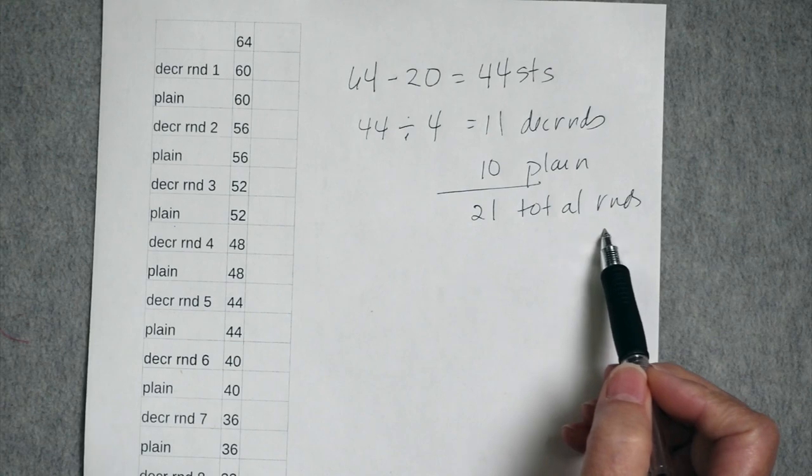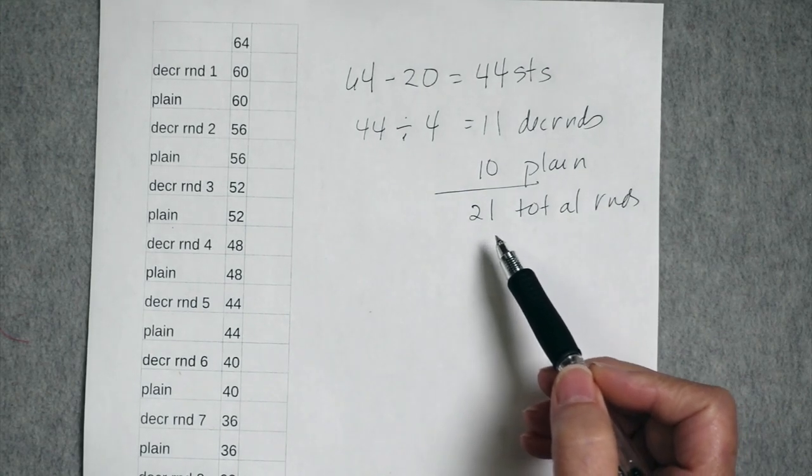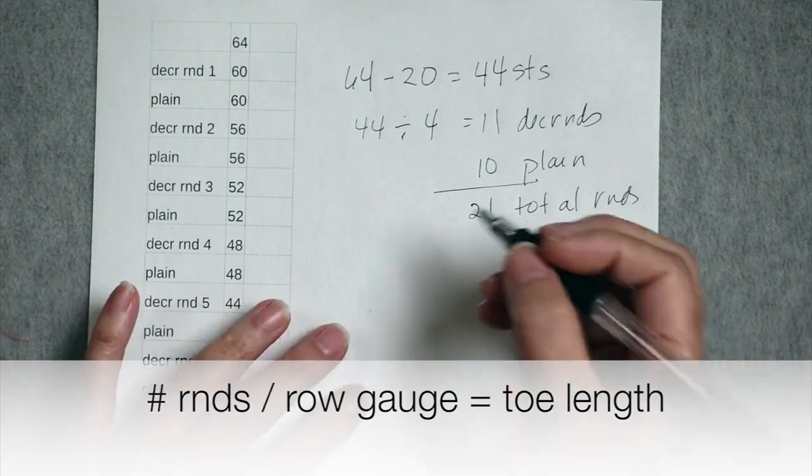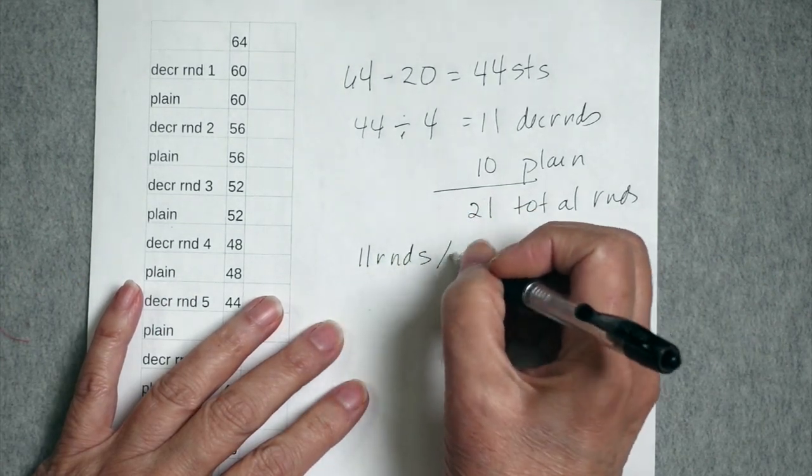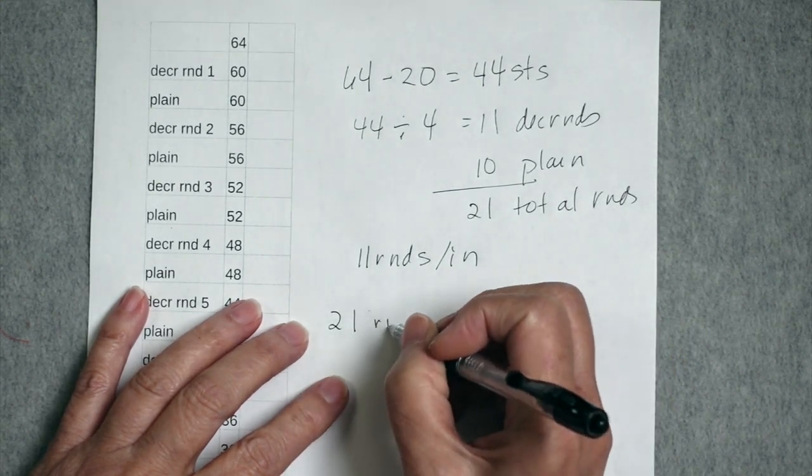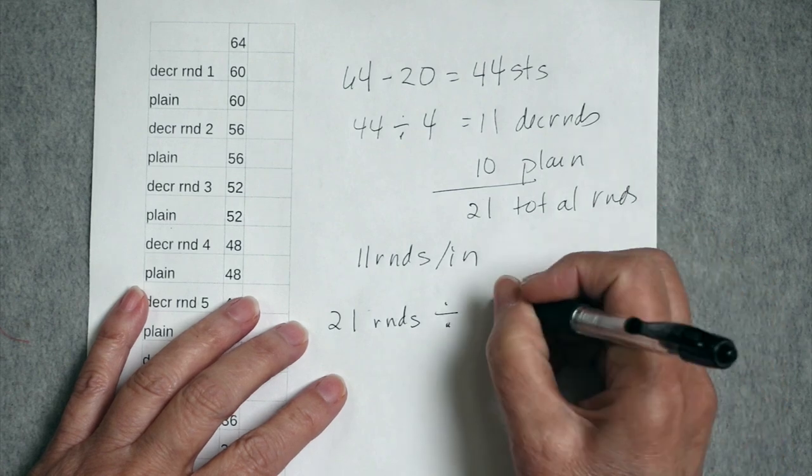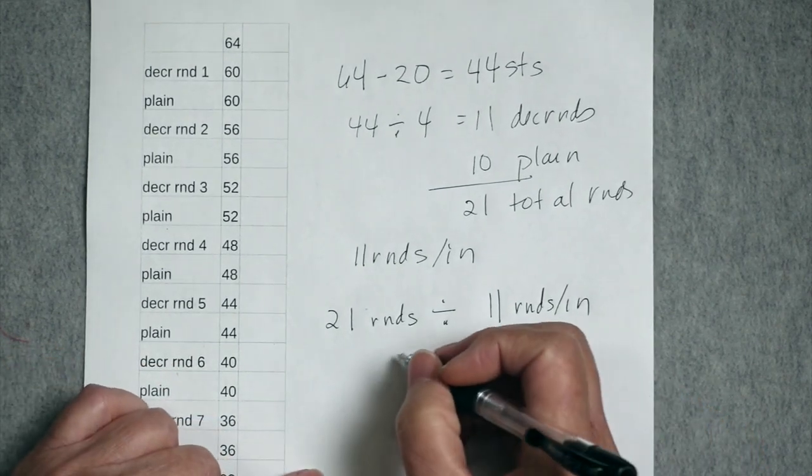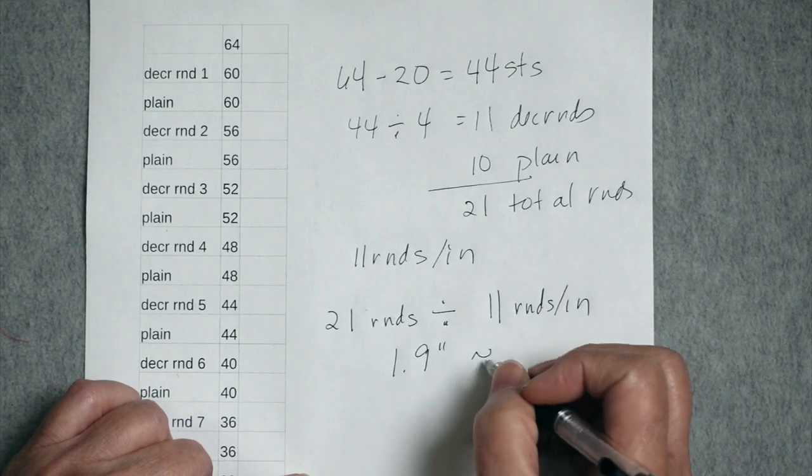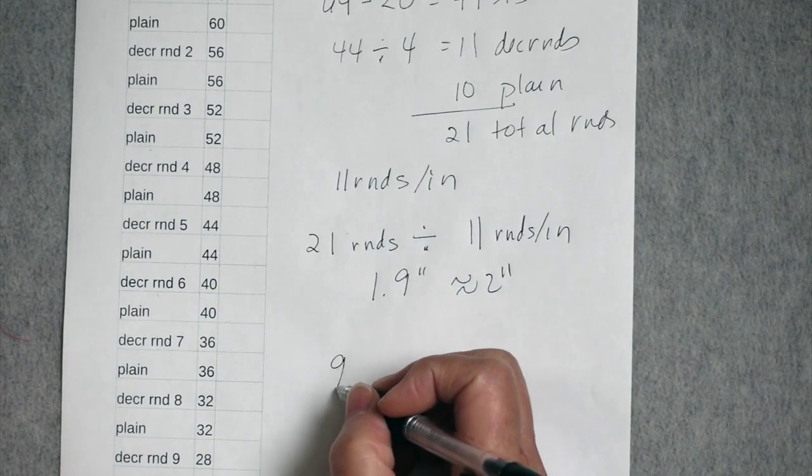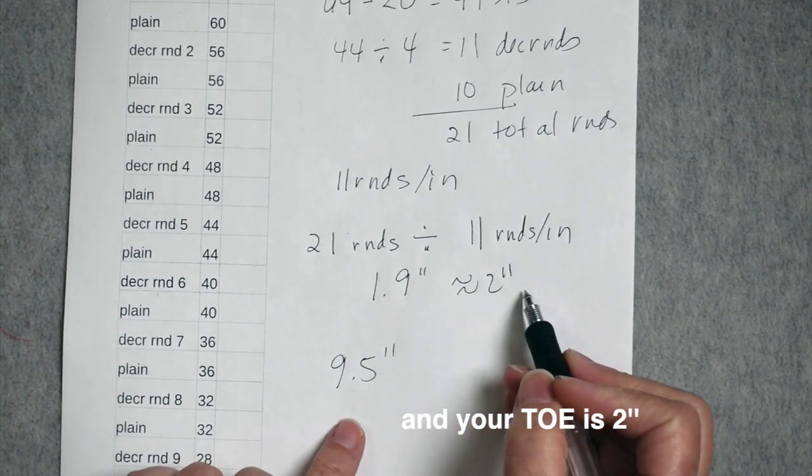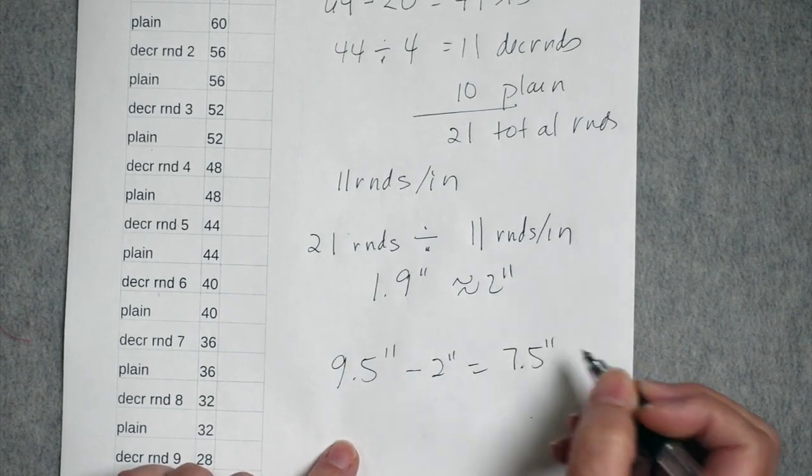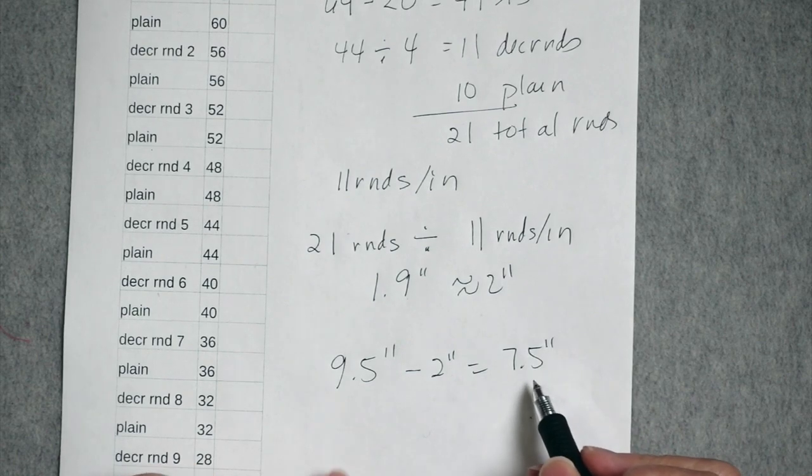Now you know how many total rounds you have. So in order to determine the length, you need to divide the number of rounds by your row gauge. Let's say that you have 11 rounds per inch. So then you would divide 21 rounds by 11 rounds per inch. And in this case, you're going to have just under two inches. It's going to be 1.9 inches, about two inches. If you want your sock to be, say, 9.5 inches in length, and your toe is going to be about two inches, just under two inches, then you are going to start your toe when the sock foot is seven and a half inches in length.